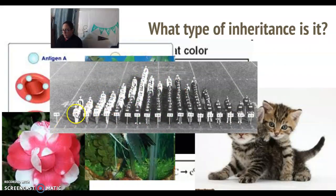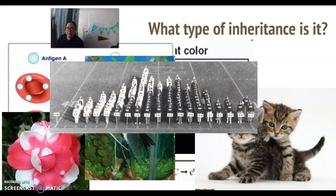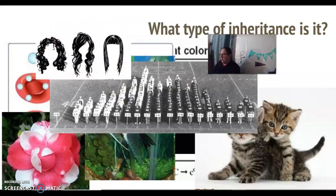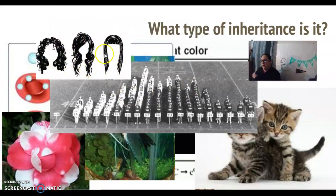Height ranging from five feet to six-foot-five is a polygenic trait — there are six genes thought to influence our height. And curly hair crossed with straight hair producing wavy hair is incomplete dominance, since they blend.